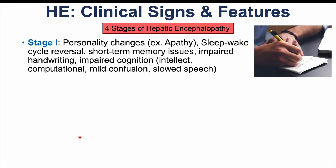There are four stages of hepatic encephalopathy. Stage one is the mildest and includes personality changes such as apathy, sleep-wake cycle reversal, and issues with short-term memory. Patients may start misplacing things, have impaired handwriting, and mild decreases in intellect and computational ability, some mild confusion, and slowed speech.